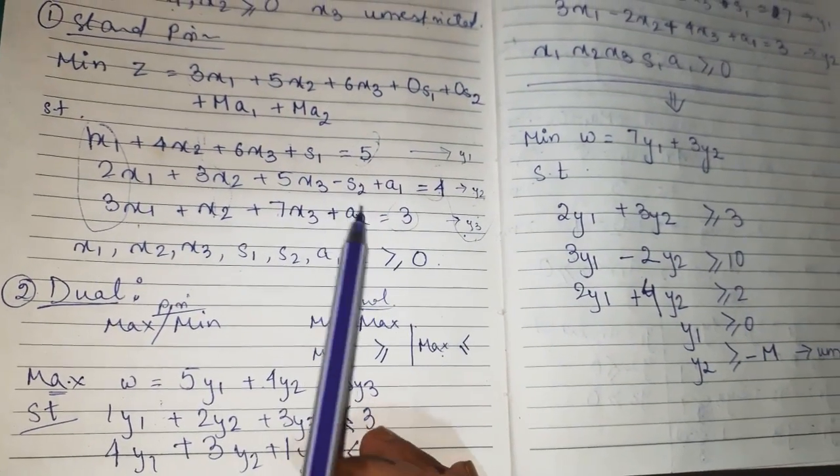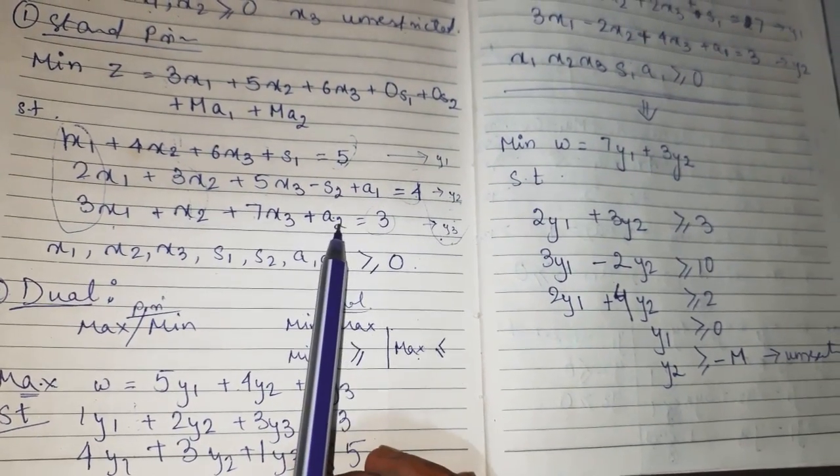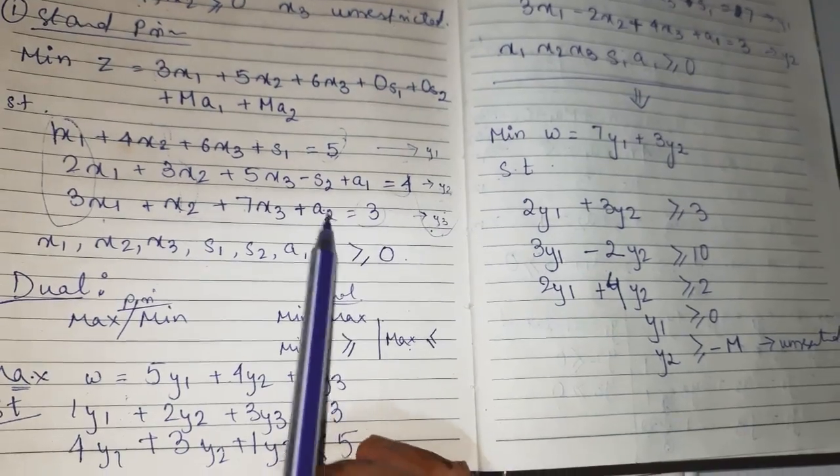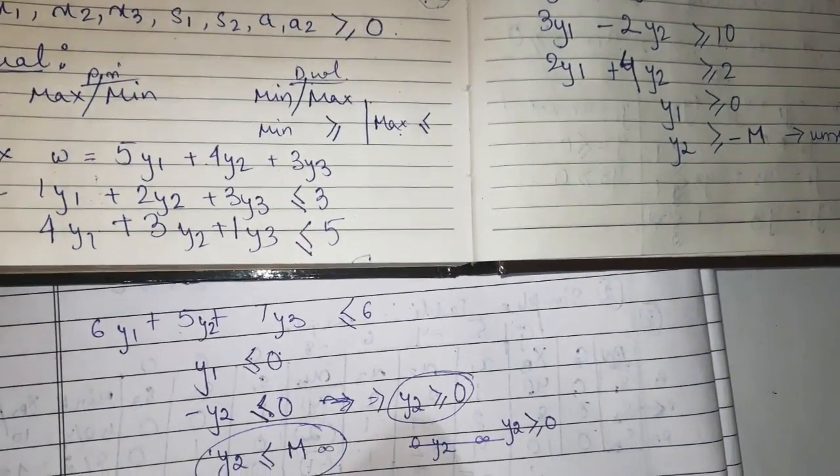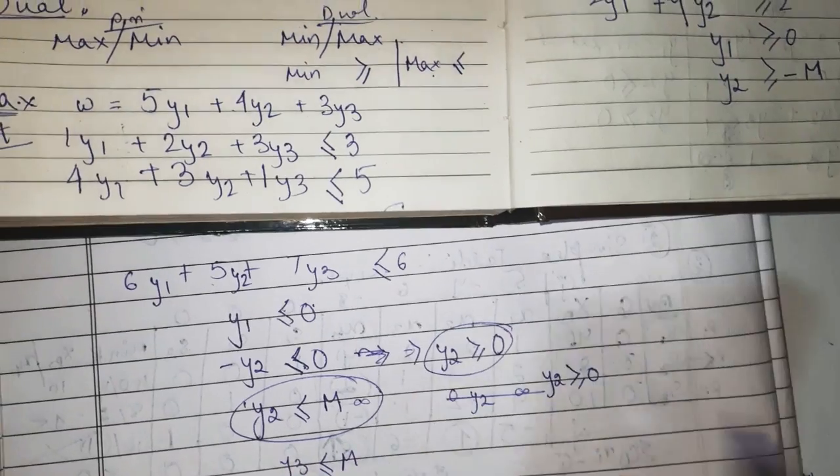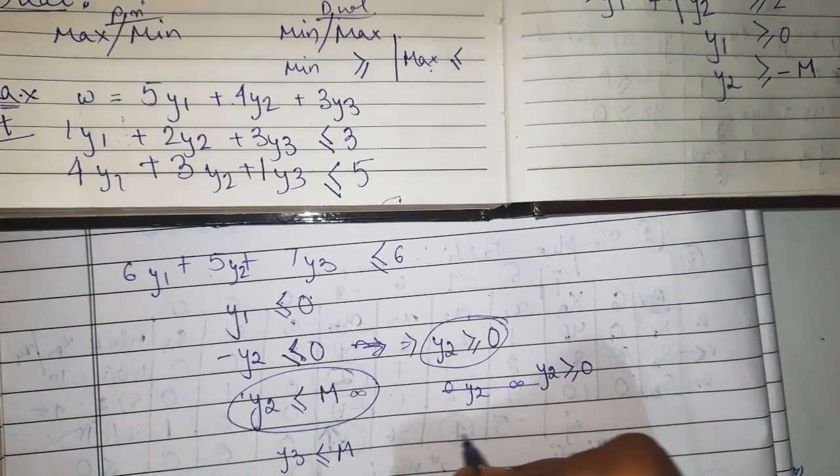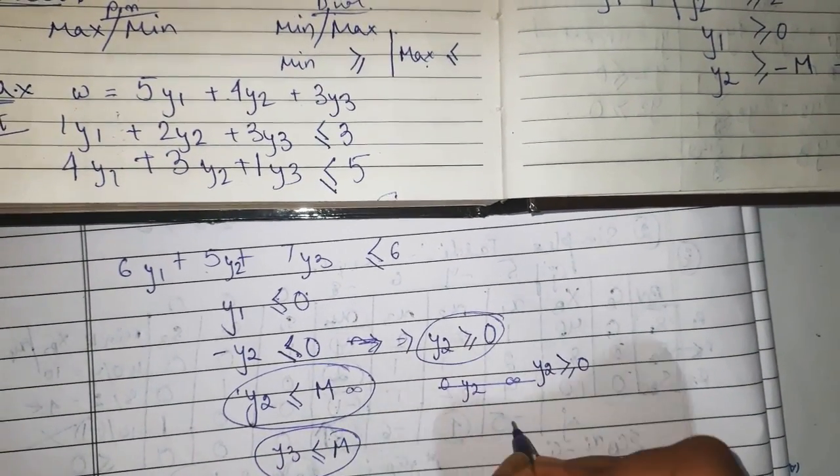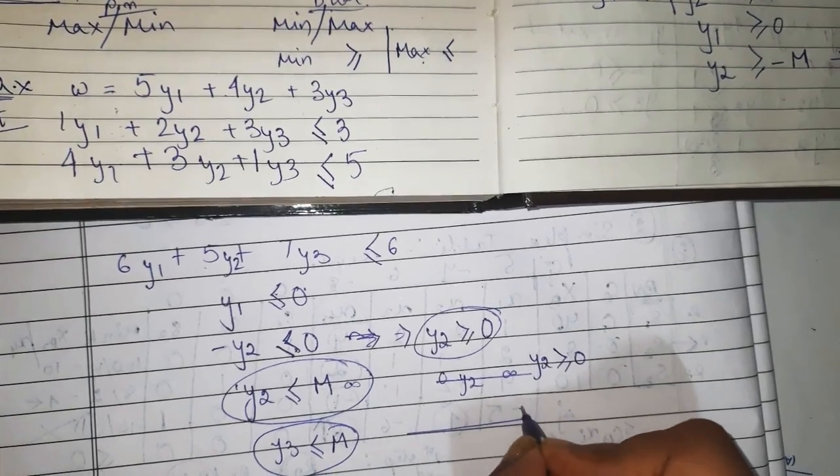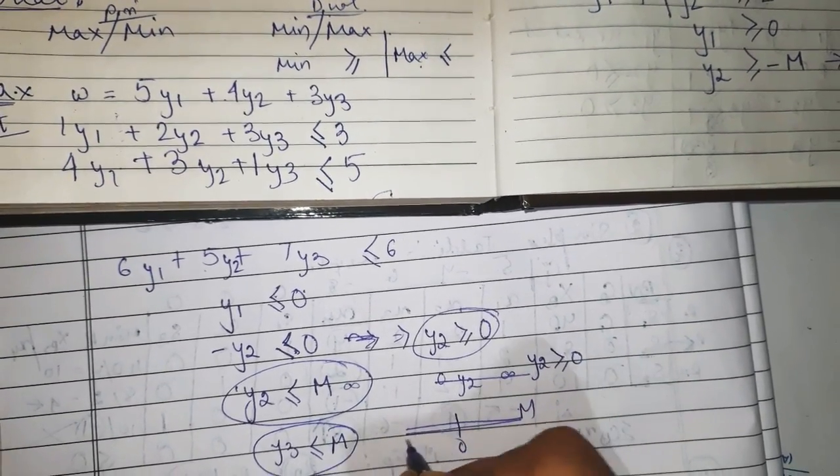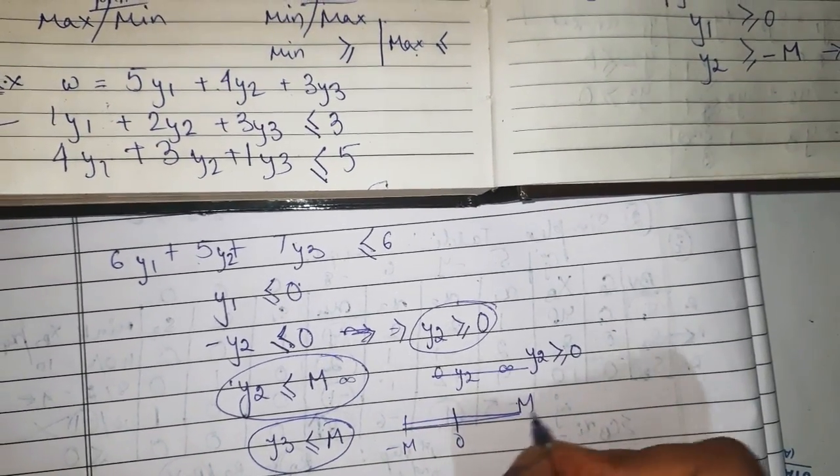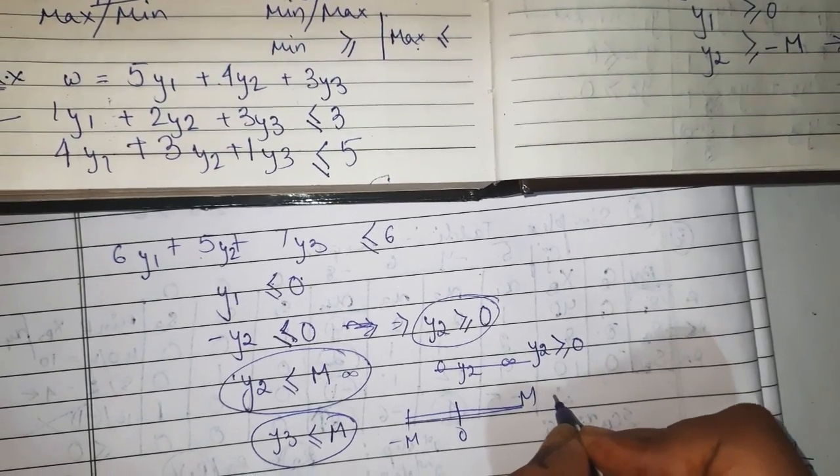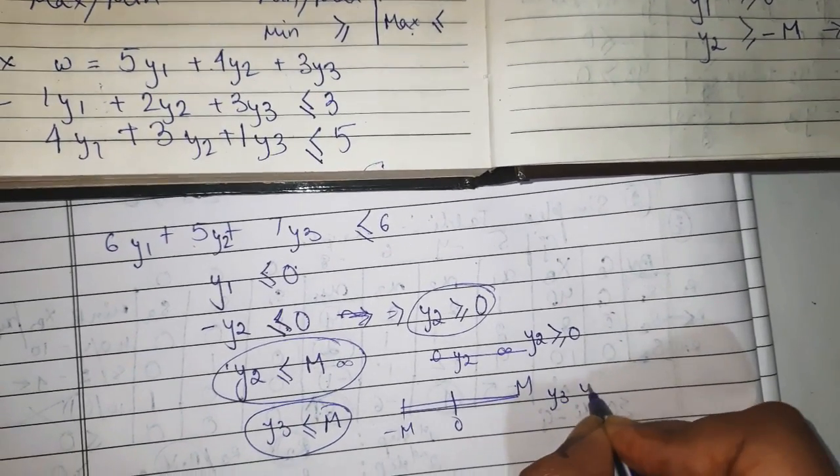Again y3 and M: y3 is less than or equal to M, and this is the only one condition. So y3 can be less than M, from 0 to minus M, anything. So we can say that y3 is unrestricted.